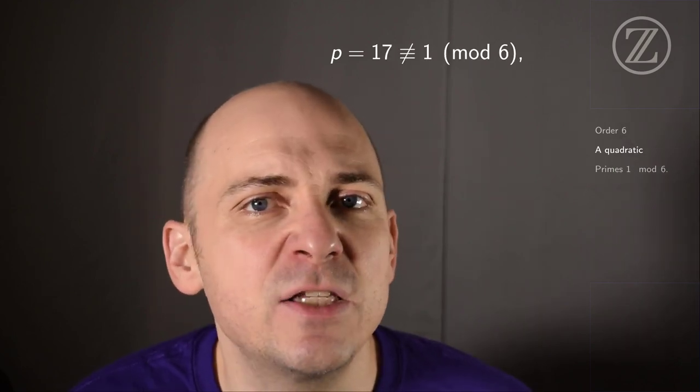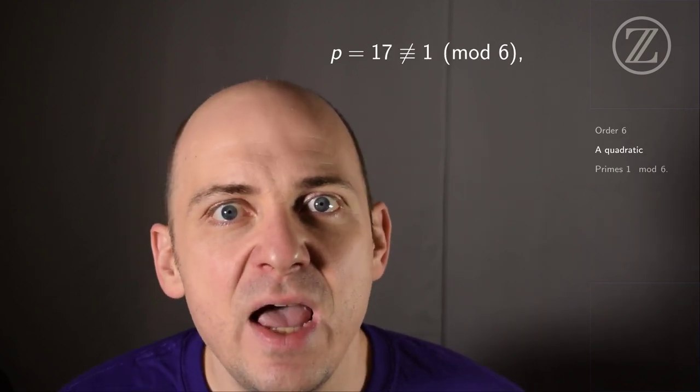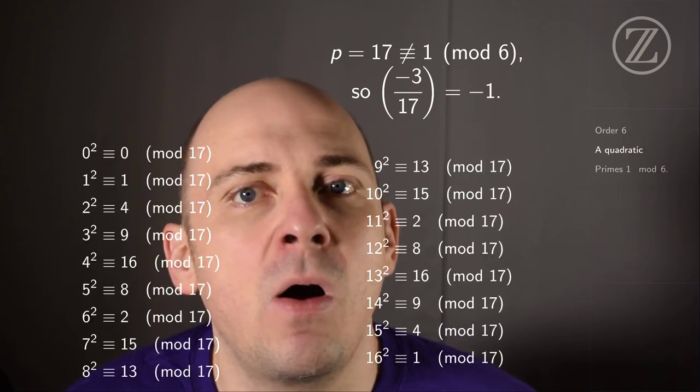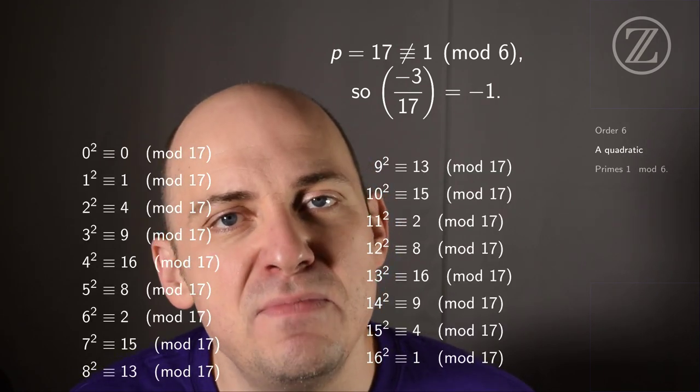On the other hand, 17 is a prime which is not 1 mod 6, and so it must be that minus 3 on 17 is minus 1. And sure enough, if we laboriously check all the squares in Z mod 17, we miss negative 3.